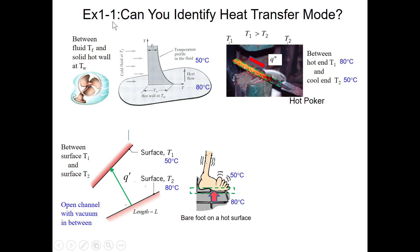Next we will practice with Example 1-1. You will be asked to identify the heat transfer mode for each case. A piece of advice: pause the video and try on your own, then compare your answers with the instructor's. The first case is heat transfer between a hot surface and a cold moving fluid — so the heat transfer mode must be convection.